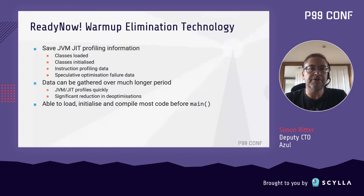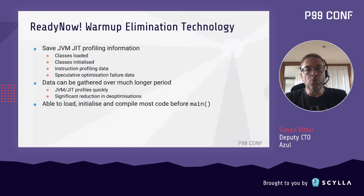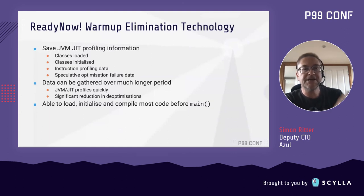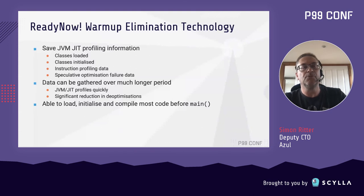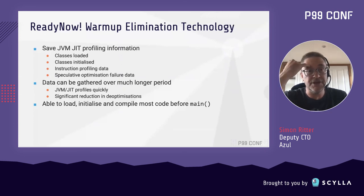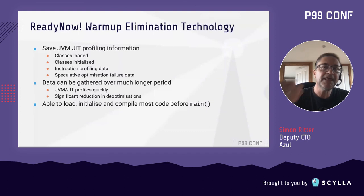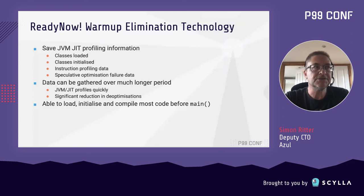We can collect that information over a long period of time — we could wait two minutes, two hours, or even two weeks if we want to collect that information. It really depends on what's the optimum time for your application. When we start the application again, rather than going through the whole process of identifying the methods that are hot and recompiling them, we simply take all that information, load all the classes we can, initialize all the classes we can, and then compile the methods we need using that profiling data. By the time you get to main, you're running at about 98% of the performance level you had when you took the profile. Run a few transactions and you're at 100%. The reason we can't do 100% straight away is because there are limitations on the way the JVM works — things like Lambda expressions and invoke dynamic limit what we can do there.